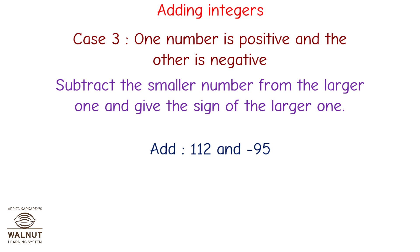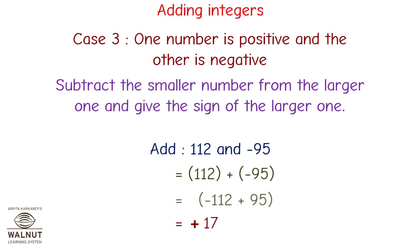Add plus 112 and minus 95. We write the statement: 112 plus minus 95. Since one number is negative and one is positive, we subtract the smaller from the larger and give the sign of the larger. The larger number is 112, so the sign will be positive. The answer is 17, so plus 17 is the answer.